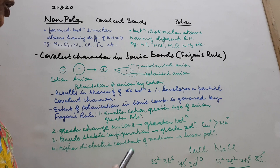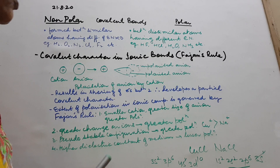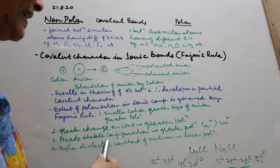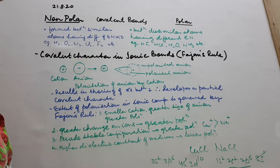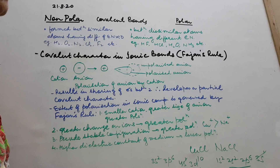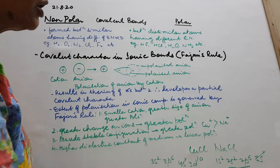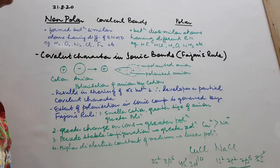The fourth factor: higher dielectric constant of the medium. If the solvent is water — which has a high dielectric constant — then the compounds show better ionic character, because in that medium there is lesser polarization. So when compounds are dissolved in a solvent with a high dielectric constant like water, they show lesser covalent character and more ionic character.